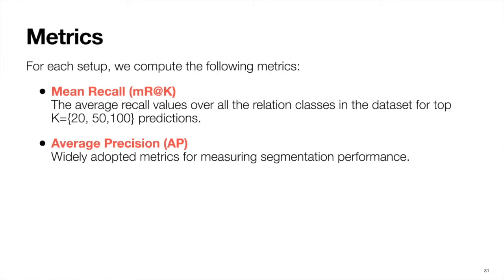We use the mean recall metric to measure the performance of various scene graph methods. As shown in prior works, the use of mean recall as opposed to regular recall is motivated by the presence of long tail distribution of relation label sampling in Visual Genome. For measuring the segmentation performance, we adopt the widely used average precision metric.